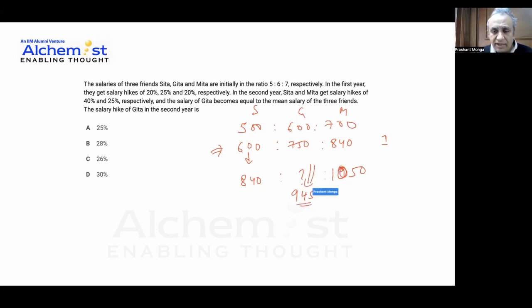The increase from here to here is 195, so 195 divided by 750 into 100 should give me the rate. Let me just cut this. I cut this, I get 15 here, I get 2 here. I cut this again, I get 13 here, so I get 26%. That's the answer.